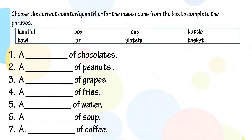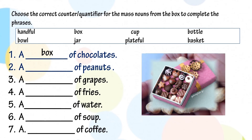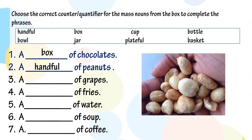Now, choose the correct counter or quantifier for the mass nouns from the box to complete the phrases. Let us check our answers. For number one, a blank of chocolate — we will use the counter: box. A box of chocolates. Number two, a blank of peanuts — we use the counter: handful. A handful of peanuts.